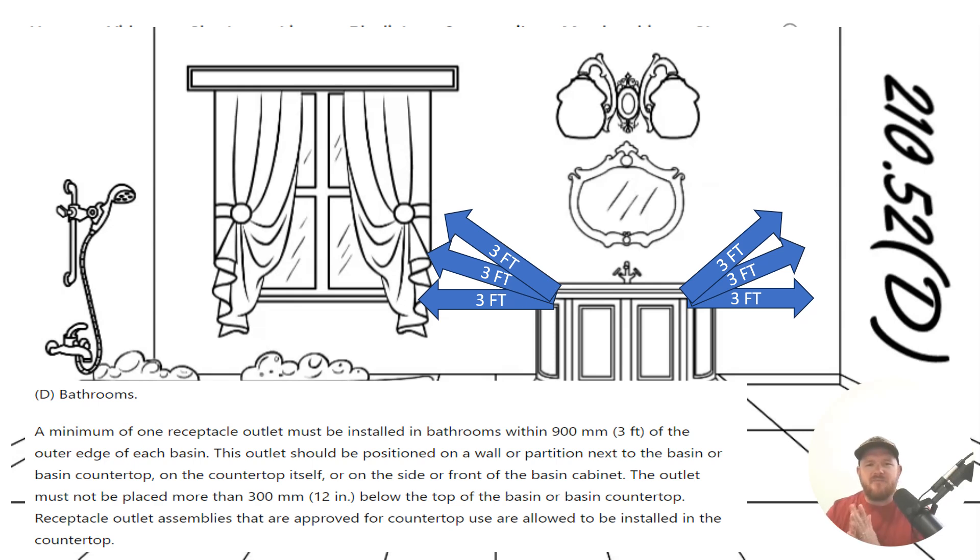Now let's finish reading the code. The outlet must not be placed more than 12 inches below the top of the basin or basin countertop. So we can't be below 12 inches there. And then let's talk about this third part here.